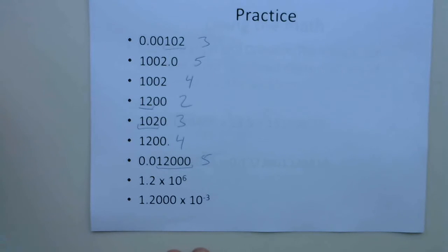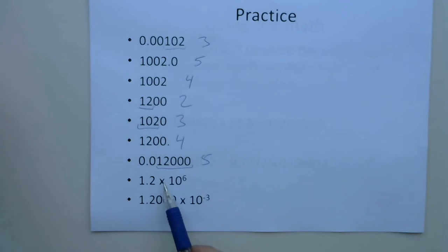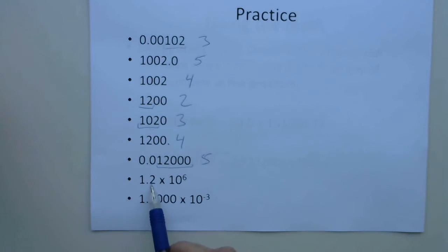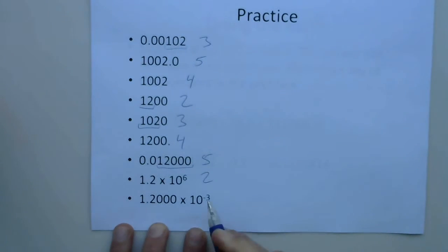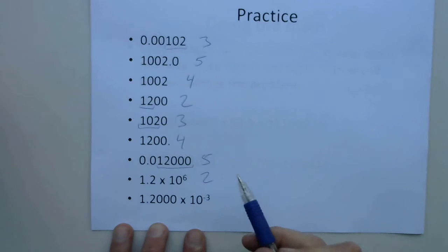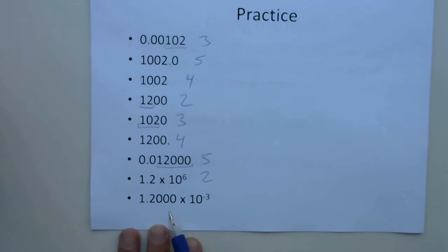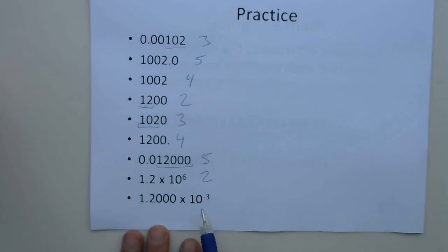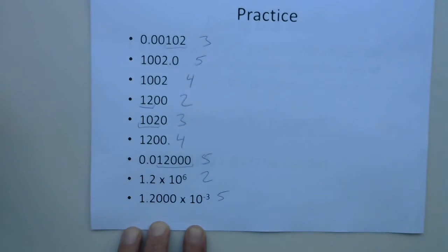Here we have a couple of numbers written in scientific notation. When looking at things in scientific notation, the 10 to the exponent part is just a placeholder — it's just telling you how big or small the number is, but it's never going to add or reduce your number of significant figures. So all you have to do is look at the number out in front. For example, a number like 3.1 × 10⁶ has two significant figures — the 10 to the sixth is important, but it's not adding to your precision. And in 1.2000 × 10⁻³, all those digits are significant because there's a decimal point, giving five significant figures.